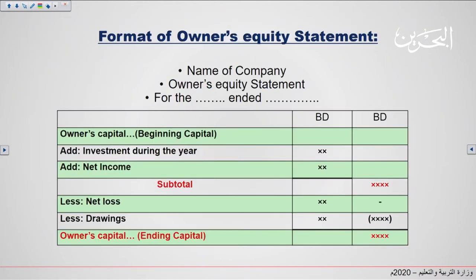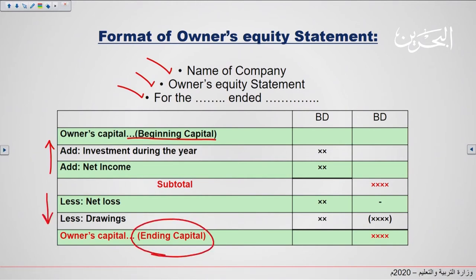Moving on to the format of the owner's equity statement. As you can see here, we have the name of the company, then the name of the statement, and the period of time. We list the beginning capital, the events that will increase the capital, and the events that will decrease the capital. Then we calculate the ending capital. This amount will be transferred to the balance sheet, which will be our lesson next time, inshallah.